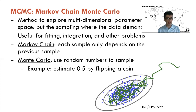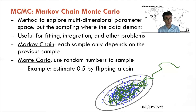MCMC is a powerful tool for exploring multi-dimensional data, useful for integration, minimization, and fitting. Markov chain means each sample is only influenced by the previous sample; Monte Carlo means it uses random numbers to decide where to go. For example, to get a Monte Carlo estimate of one-half, you flip a coin a hundred times and count how many come up heads — the more flips, the better the estimate.